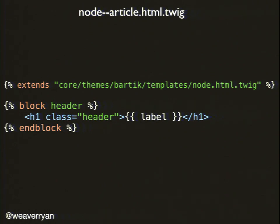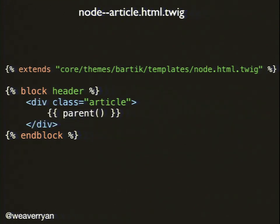If you don't want to completely override a block, but just surround it with an extra div, you can use the parent() function — it echoes out the parent's contents. So you'd write 'div class=article,' then parent(), then close div. This takes the default content from the parent block and wraps it. When I saw this, I was like — this is a home run right here. I would use the heck out of this.